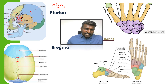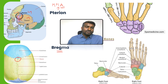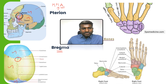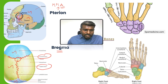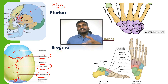Look at the marked area here — this is called bregma. We have the frontal bone, parietal bone, and occipital bone. The suture between the frontal and parietal is called the coronal suture, this is the sagittal suture, and the one down here is the lambdoid suture.